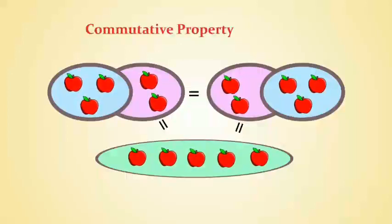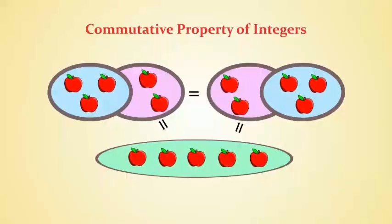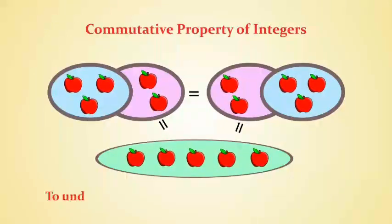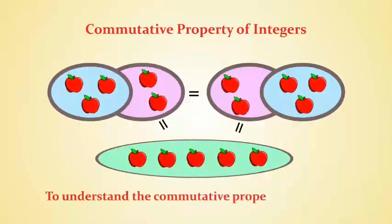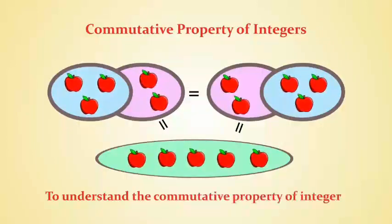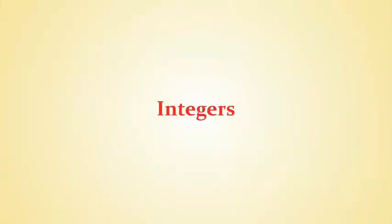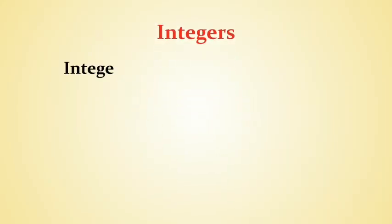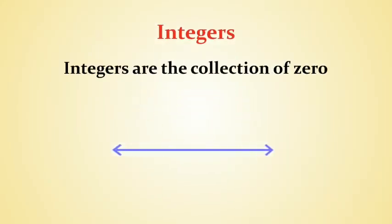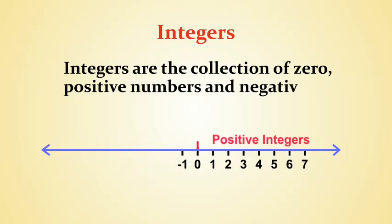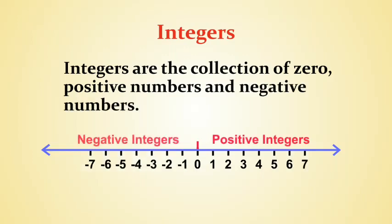Commutative property of integers. Objective: to understand the commutative property of integers. You must be familiar with integers. Integers are the collection of 0, positive numbers, and negative numbers. We can draw integers on the number line as shown.